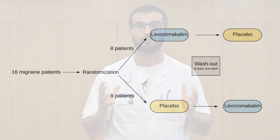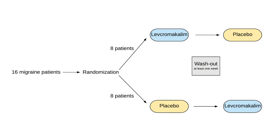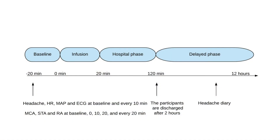To test our hypothesis, we recruited 16 otherwise healthy patients diagnosed with migraine without aura. The patients were randomly allocated to receive intravenous infusion of levcromakalim or placebo over 20 minutes on two days separated by at least one week. Migraine characteristics including headache intensity and accompanying symptoms, middle cerebral artery blood flow velocity, and the diameter of superficial temporal and radial arteries were recorded before and after the beginning of infusions.